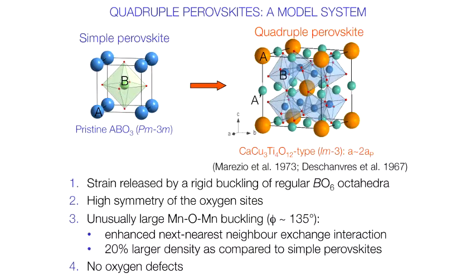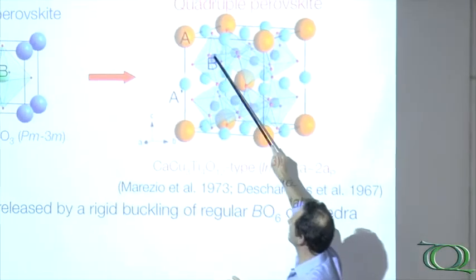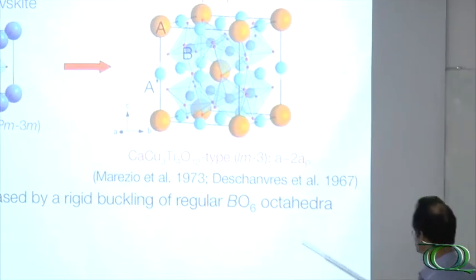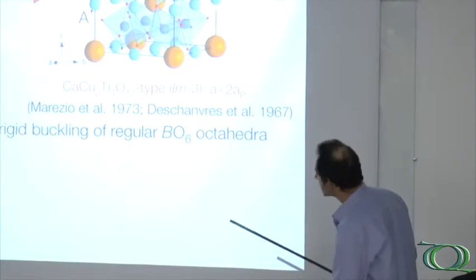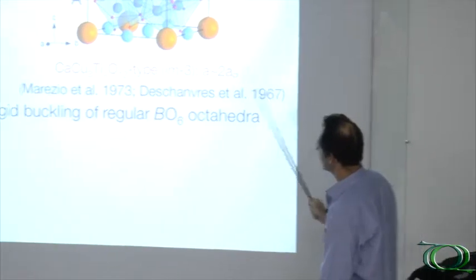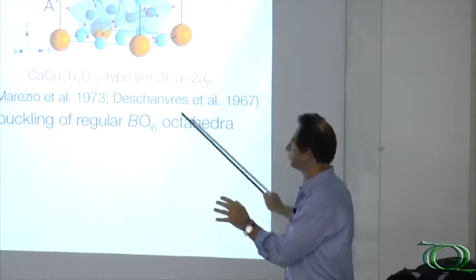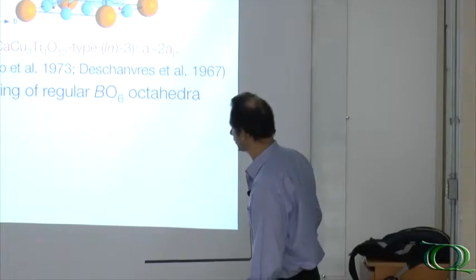This A-prime site is also Young-Teller and enables a large rigid buckling of the octahedra. The buckling adjusts the distance between AO and BO without distorting the octahedra, so the Young-Teller effect acts without the perturbation of the lattice distortion.